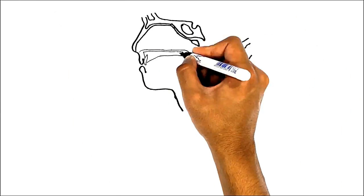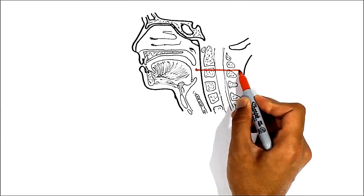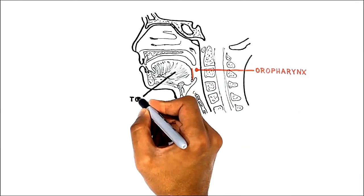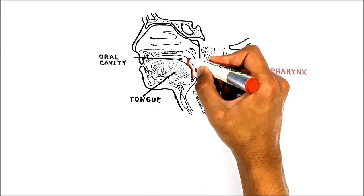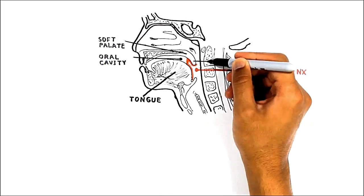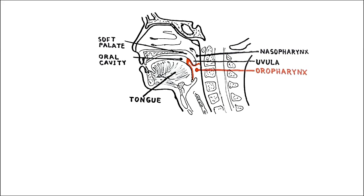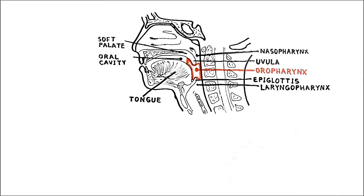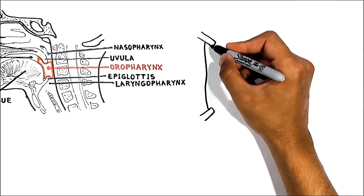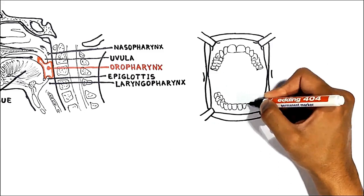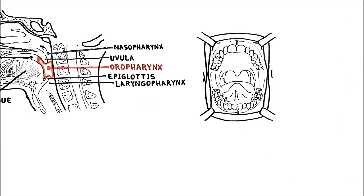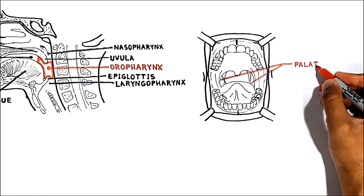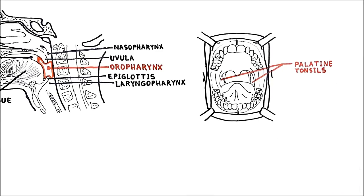The second part of the pharynx is the oropharynx, lying behind the oral cavity. Anteriorly it is bordered by one third of the tongue and the oral cavity; superiorly by the soft palate, uvula, and nasopharynx; posteriorly by the pharyngeal muscles lined by mucous membrane; and inferiorly by the laryngopharynx and the superior border of the epiglottis. It is the only part of the pharynx visible when you open the mouth, and on its lateral walls are the palatine tonsils, which are part of Waldeyer's ring.